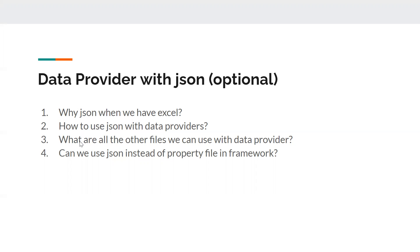The concept remains the same whether you use Excel, JSON, YAML, or XML — you just need to read the value, put it in an object array, and feed it to your DataProvider. The DataProvider will take care of feeding it to your test method. I'm going to cover it with JSON so you can take it forward to other file types as well. We can also use JSON instead of a property file in our framework — this was requested by one of the subscribers in the comment section.